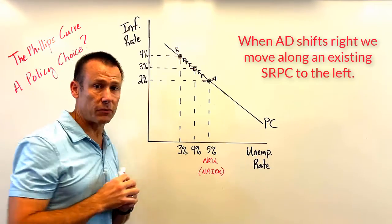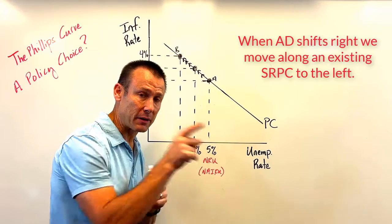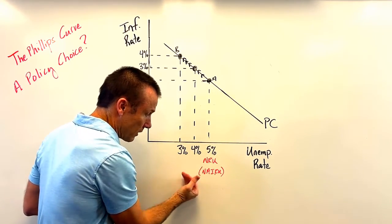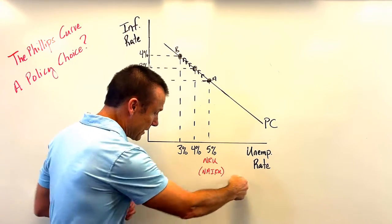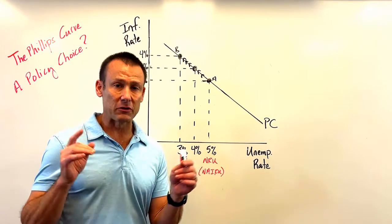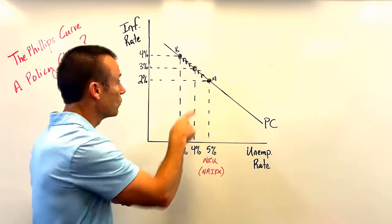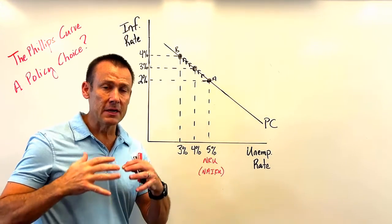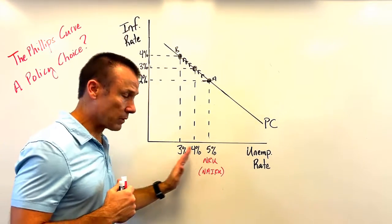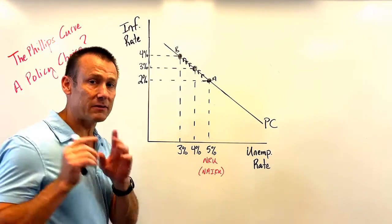Key takeaway: when the AD curve shifts, we move along the Phillips Curve. If AD shifts right, we move left along the Phillips Curve. That's because in an AS-AD model moving right means the economy is getting better, and in a Phillips Curve model the economy getting better means moving left. So AD shifts right, and we move left along the Phillips Curve — getting that lower unemployment rate but accepting a higher inflation rate, stimulating the economy.